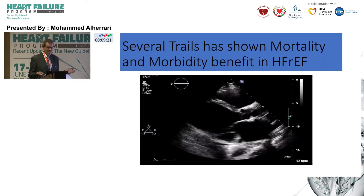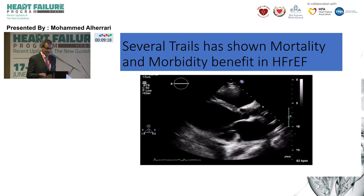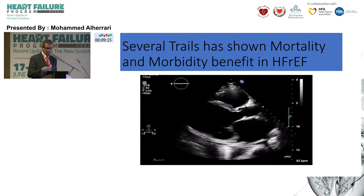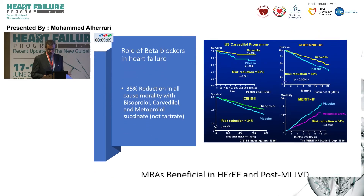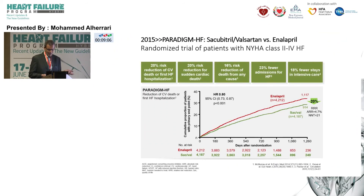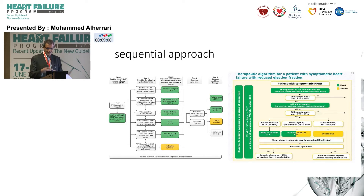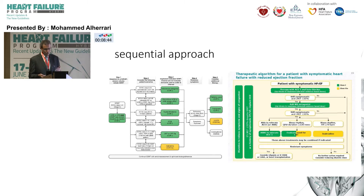Over the last two to three decades, we've been fortunate to have many trials demonstrating mortality and morbidity benefit with clear guideline recommendations — starting with ACE inhibitors and ARBs, then beta blockers, then MRAs, and then the landmark PARADIGM trial with sacubitril/valsartan. The 2016–2017 European and American guidelines incorporated these and put them in a sequential, stepwise fashion: give beta blocker and ACE inhibitor, see the patient in two weeks, titrate dose, add MRA, counsel for device, and so on.